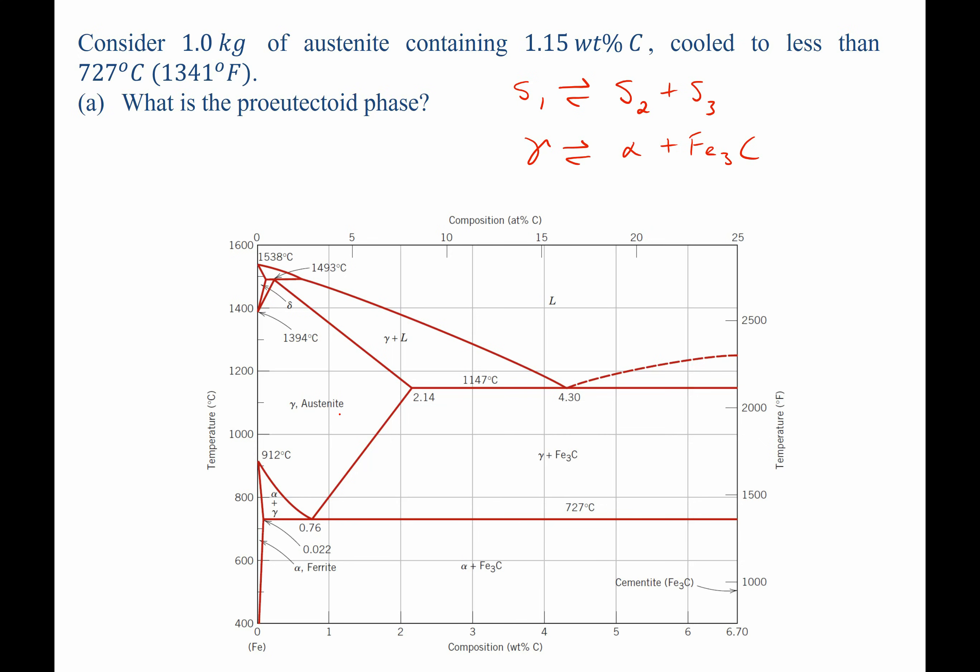austenite going to a mixture of ferrite plus Fe3C. Therefore, we look, and as we're descending in temperature, we will eventually get to the point where we have alpha plus Fe3C, ferrite plus cementite. But before we get there, we have to go from a region where we have a mixture of austenite and Fe3C. So therefore, Fe3C, this is our pro-eutectoid phase. That's the phase that's forming before the eutectoid reaction.